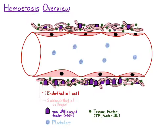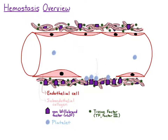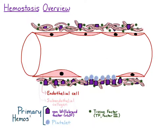So let's say that this blood vessel is injured, and the endothelial cell is compromised, and it exposes that subendothelial collagen. The von Willebrand factor binds to platelets, because platelets have receptors for von Willebrand factor, and those platelets act to cover that void. So it forms this primary hemostatic plug, which is also known as primary hemostasis.